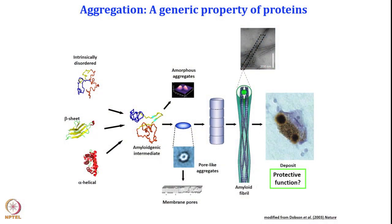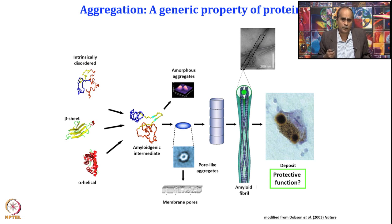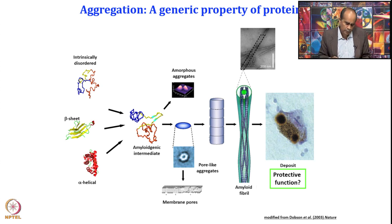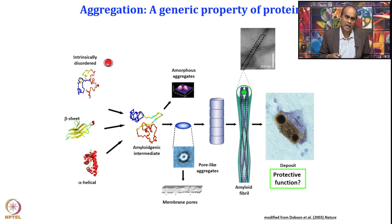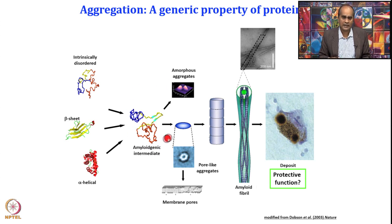What are actually amyloid fibers? It has been shown — it was proposed by Chris Dobson — that aggregation is a generic property of any protein. Under certain physiochemical conditions, all proteins aggregate, whether it is an intrinsically disordered protein, a beta-sheet protein, or an alpha-helix protein. When aggregation starts, they actually partially unfold and make some kind of intermediates which can form various kinds of aggregates.